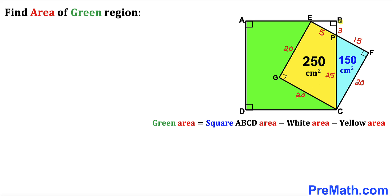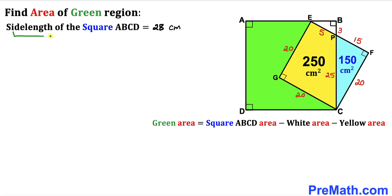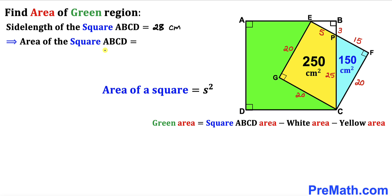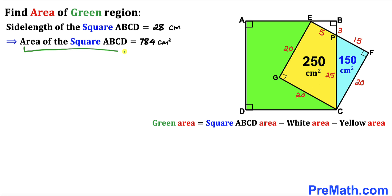BP is 3 and PC is 25, so the whole side length BC of the square equals 3 plus 25, making 28 centimeters. Therefore the side length of square ABCD is 28 centimeters. Using the area formula, the area of square ABCD equals 28 squared, which equals 784 centimeter square.